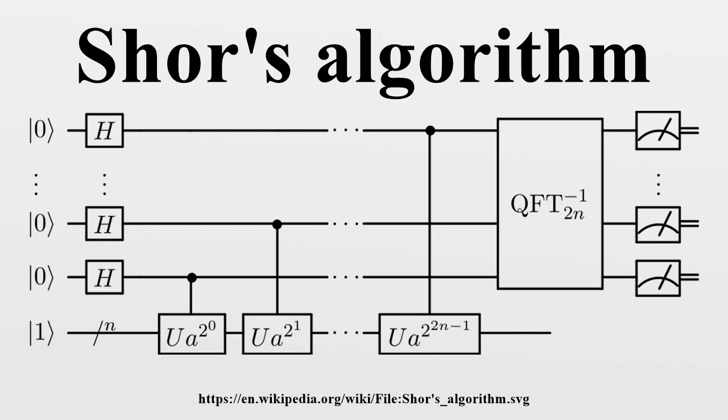Shor thus had to solve three implementation problems, all of them had to be implemented fast, which means that they can be implemented with a number of quantum gates that is polynomial in log n. Create a superposition of states. This can be done by applying Hadamard gates to all qubits in the input register. Another approach would be to use the quantum Fourier transform.